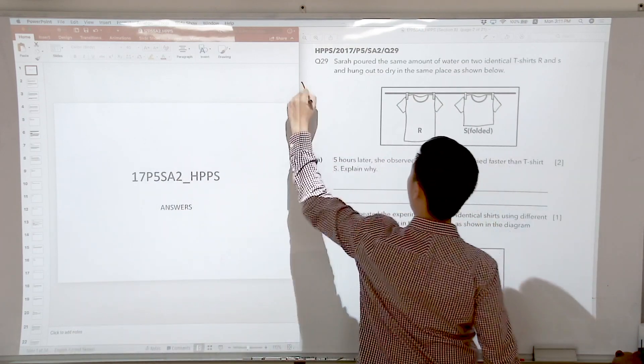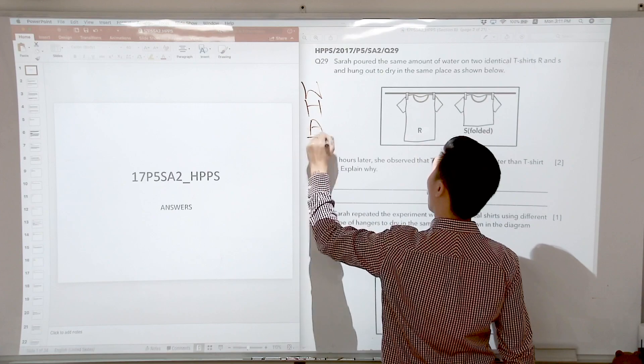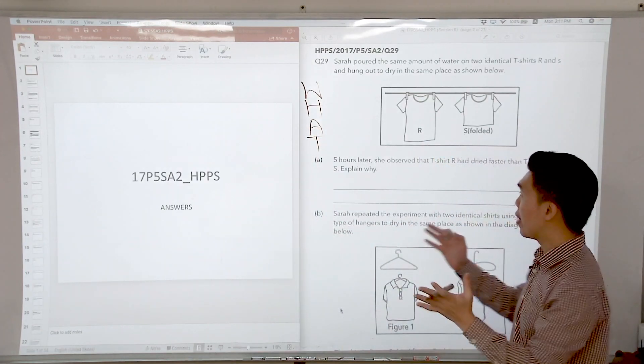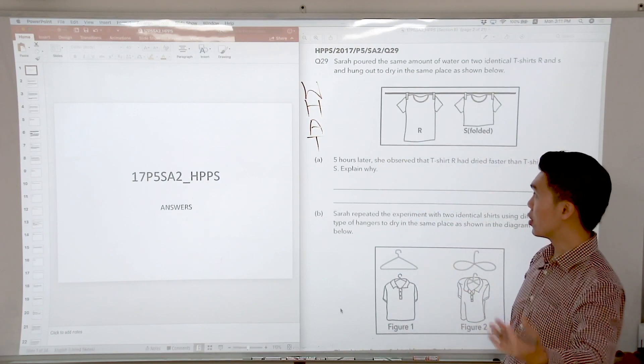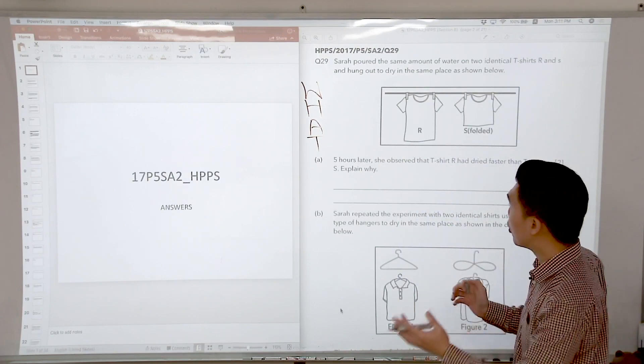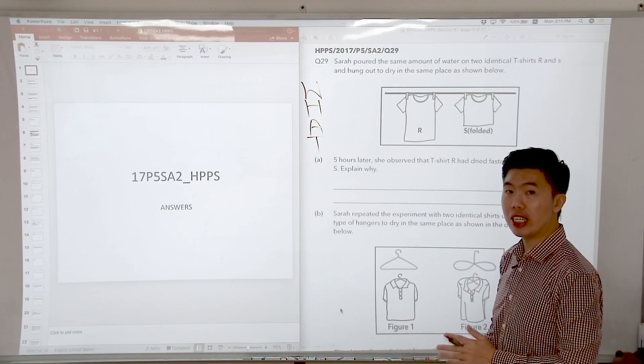What I teach my students is I tell them to follow the acronym WAT. What does WAT stand for? W stands for wind, H stands for humidity, A is area of exposed surface or some students may call it exposed surface area, and the last one is T, temperature.